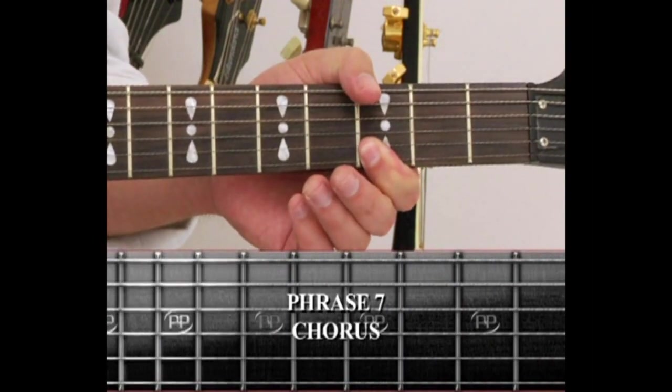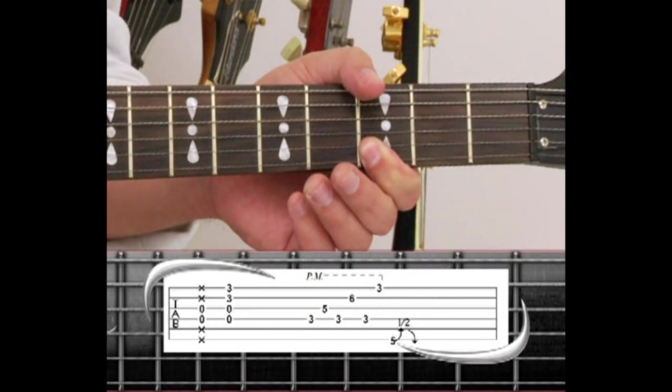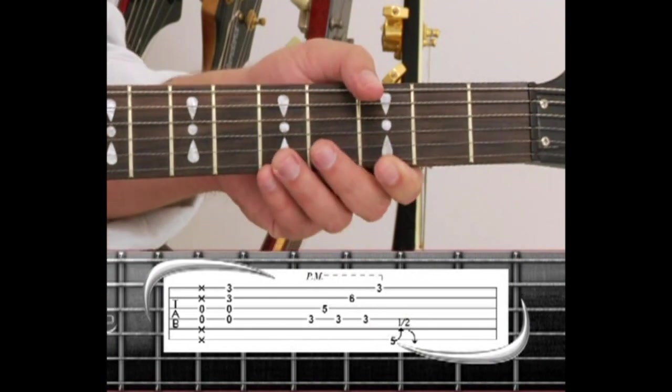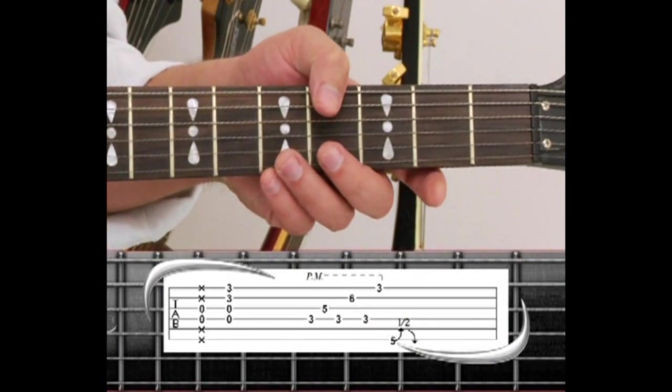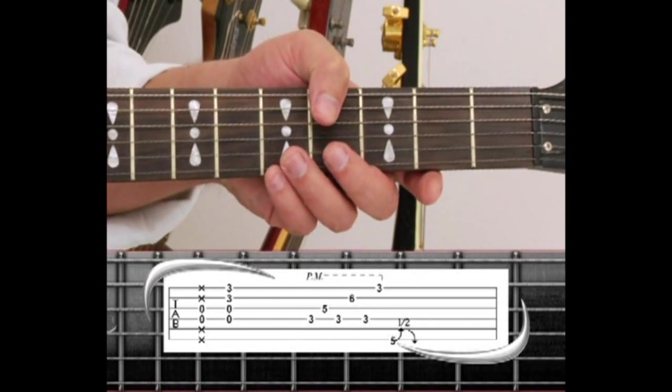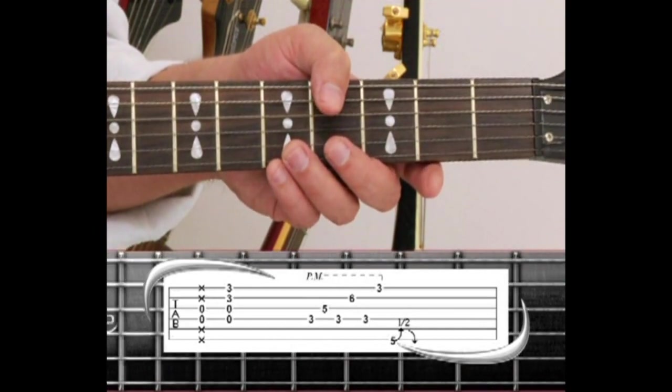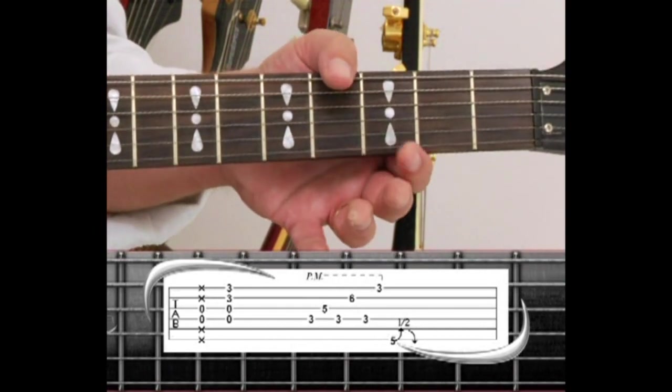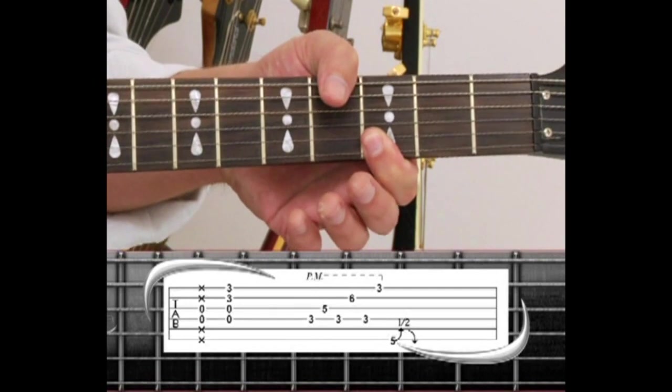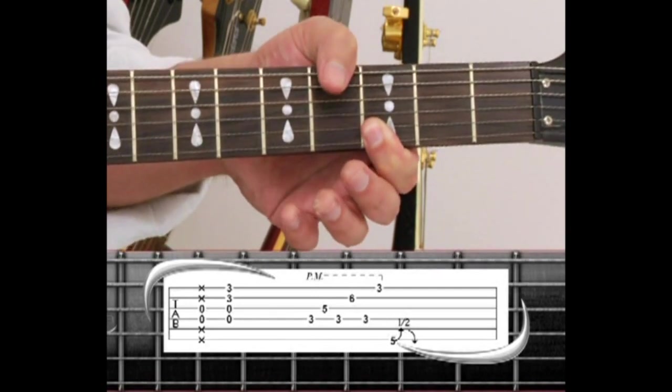Phrase 7 introduces the chorus, muting strings 1, 2, 5, and 6, allowing only the open 3rd and 4th strings to ring out. Then add strings 1 and 2 with the index finger across the 3rd fret. Strings 5 and 6 are still muted.